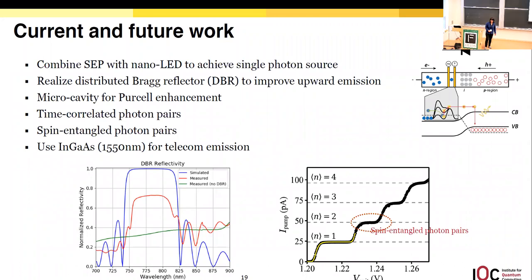Now we have a working single electron pump and working nano LEDs. The next step is to combine them together to make a single photon source. That is what we're currently working on now. We're also working on adding the DBR and micro cavity to improve the collection efficiency for single photon source. After those, we could work on time-correlated or spin-entangled photon pairs. Lastly, we could also include indium gallium arsenide to reach telecom wavelength emissions.